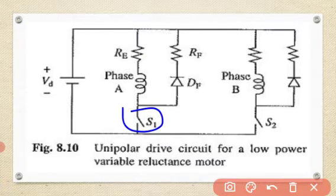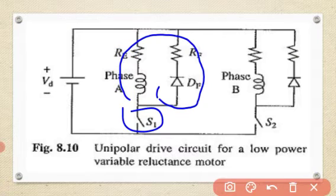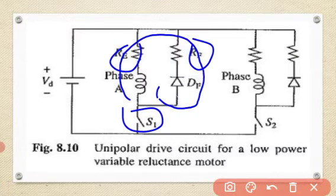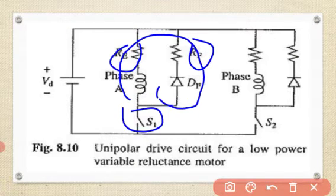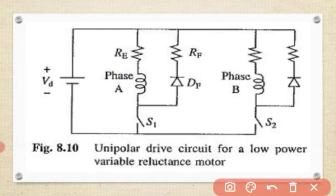When S1 is open, the phase current decays through the freewheeling path consisting of phase A, diode Df, resistance RF, and external resistance RE. The external resistance RE reduces the electrical time constant, thereby speeding up the current buildup. The value of RE is chosen to fix the electrical time constant, and then the source voltage VD is chosen to produce the rated current IR in the phase winding.